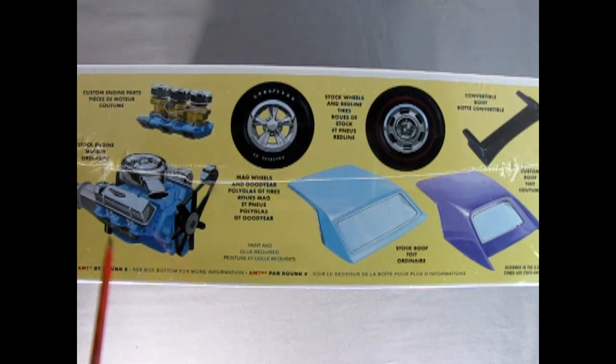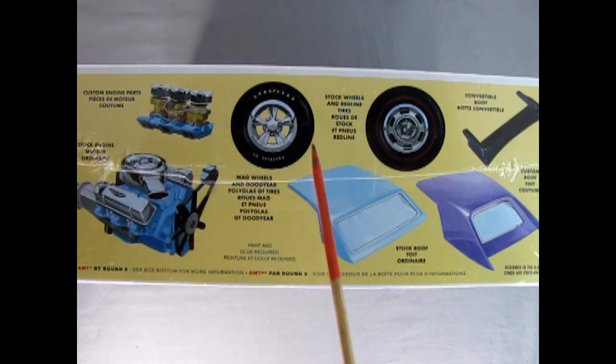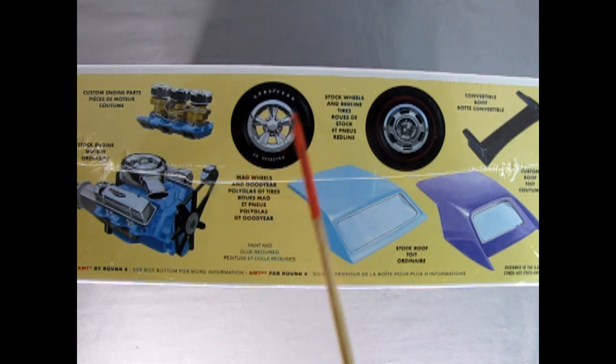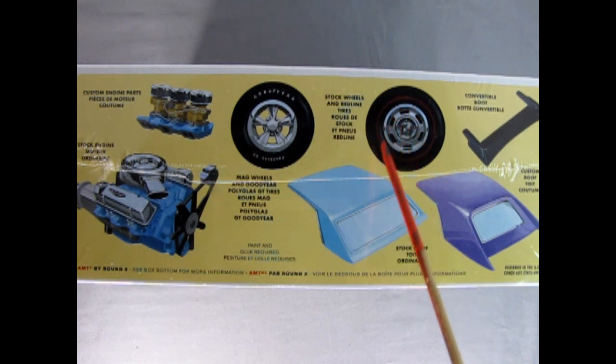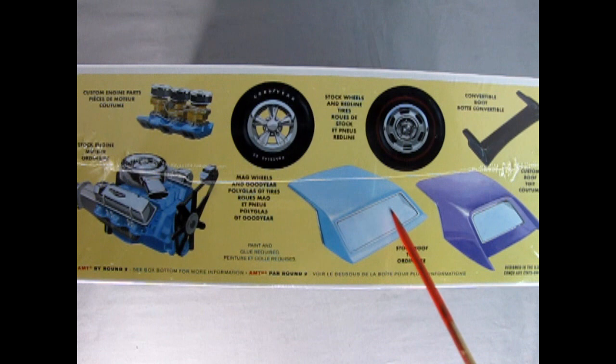Here we have our Pontiac 389 high performance engine with the four-barrel carburetor underneath this wonderful air cleaner. And you do have the option of building it as the tri-carb version which was also a factory stock option. Here we have our Goodyear polyglass GT tires with the white letters printed on as well as our mag wheels. And then for the stock we have the Pontiac rally wheel with the center cap as well as the redline tires. Here's our convertible boot if you want the top down and our stock roof for the top up. And then we also have this really wonderful custom roof with the sunken in rear window.